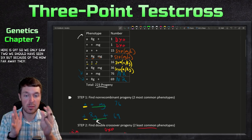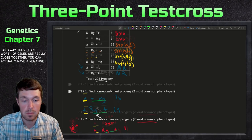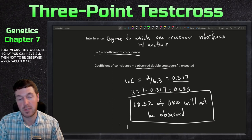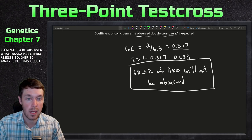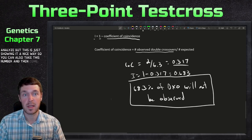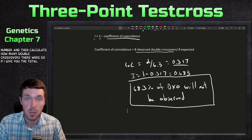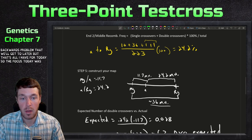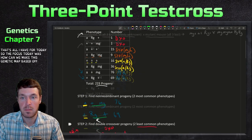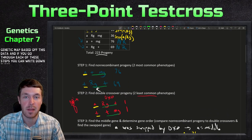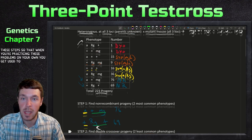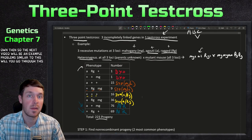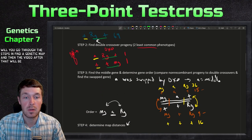We only saw 2 double crossovers when we should have seen 6, because of how far apart these genes are. If genes are very close together you can actually have negative interference. This shows nicely how interference can be calculated. That's all for today — the focus was how to make a genetic map from this data. The next video will be a forward example problem, and the one after will be the backwards version where you work from the gene order.